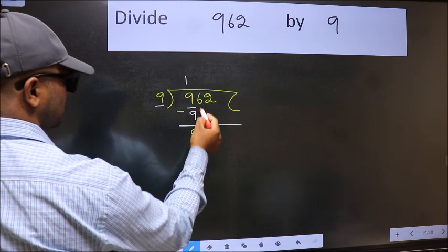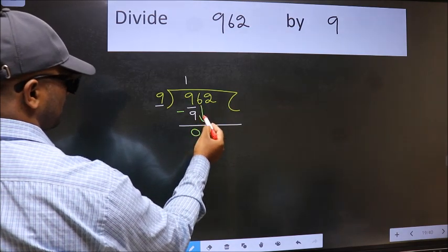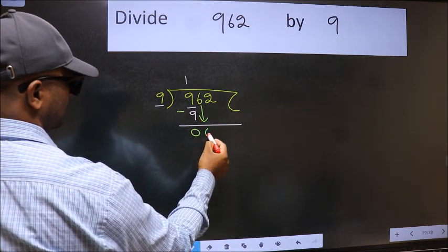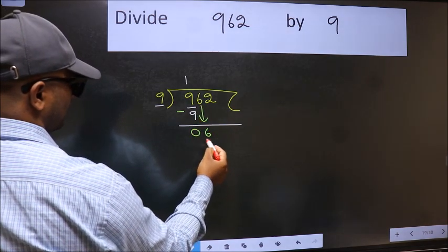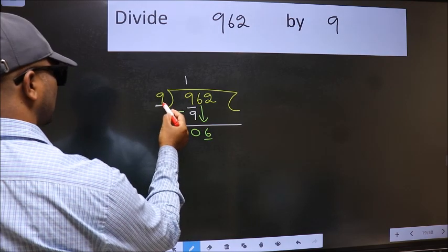After this, bring down the beside number. So 6 comes down. Now here we have 6 and here 9.